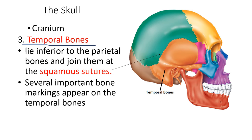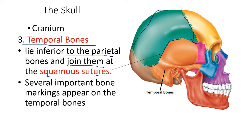The temporal bones lie inferior to the parietal bone — below the parietal bone — and they are joined at the squamous suture. So we have the sagittal suture, coronal suture, and squamous suture. There are several important markings on the temporal bone that are very important in nursing.